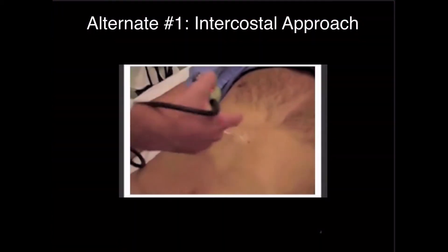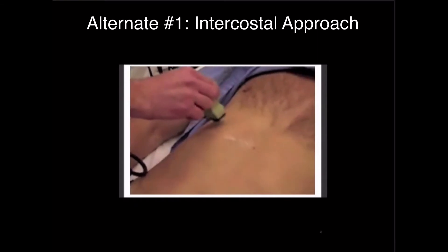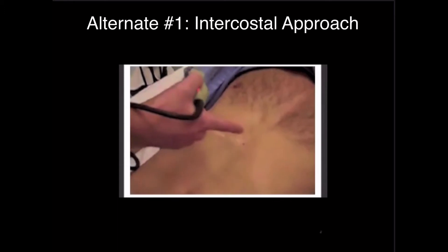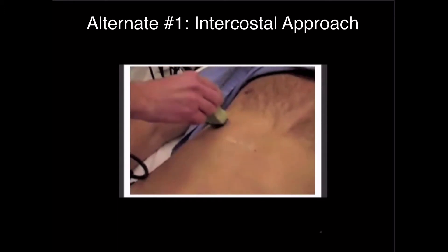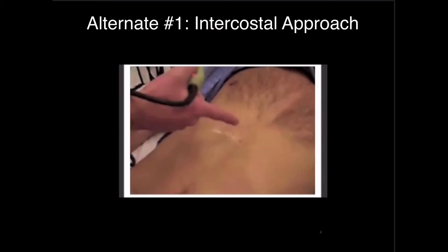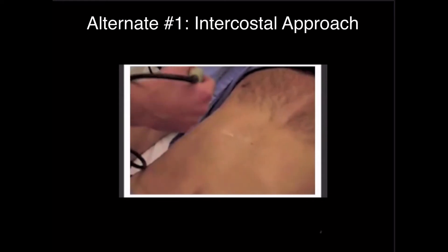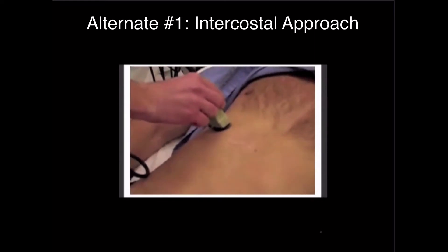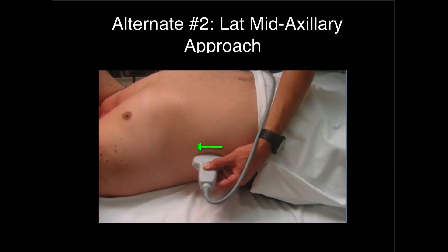The intercostal approach involves finding the xiphoid process and scanning through the right rib spaces, approximately seven centimeters to the patient's right of the xiphoid process, to see between those rib spaces and get a good image of the gallbladder. Another alternate approach is the lateral mid-axillary approach — basically the FAST or Morrison's pouch approach. You start on the lateral aspect of the ribcage and slide up until the liver comes into view, then fan through it to see if you can locate the gallbladder. This works well in patients who have a laterally positioned gallbladder.